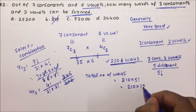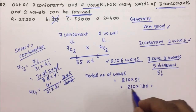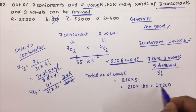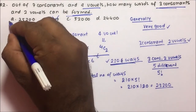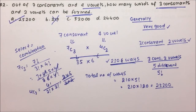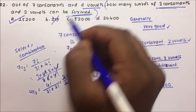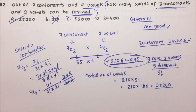5 factorial equals 120. So 210 × 120 = 25,200. That means 25,200 is the correct answer. This was a very good question. Generally, students will just select 3 consonants and 2 vowels but will not arrange them. But clearly the question asks how many words of 3 consonants and 2 vowels can be formed — so arrangement is necessary. I hope you understood this very important question.